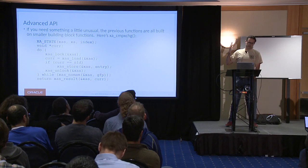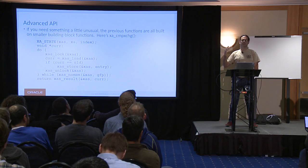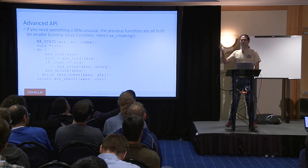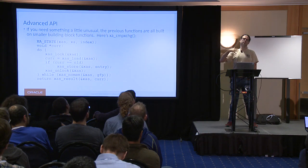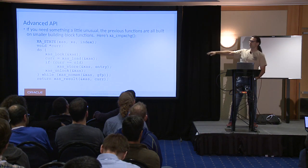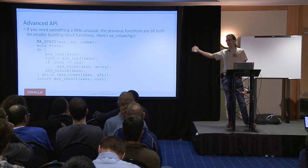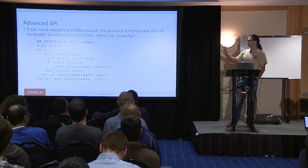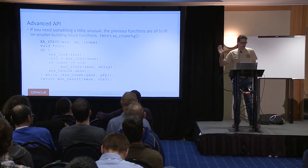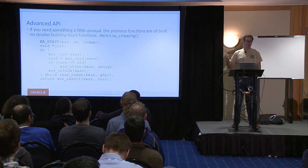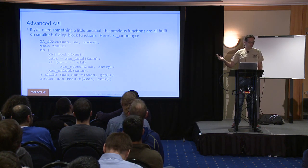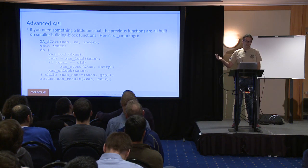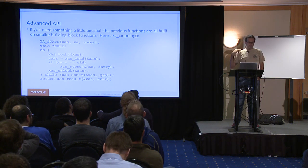This internal value will never be returned by xa_for_each. So if you iterate across it, it will appear to be null to you. But if you use the advanced API, you do get to see all of the internal entries and other details. I'm not going to talk about the advanced API in this talk, but I have written kernel doc for all of the functions and an RST file — please read it.